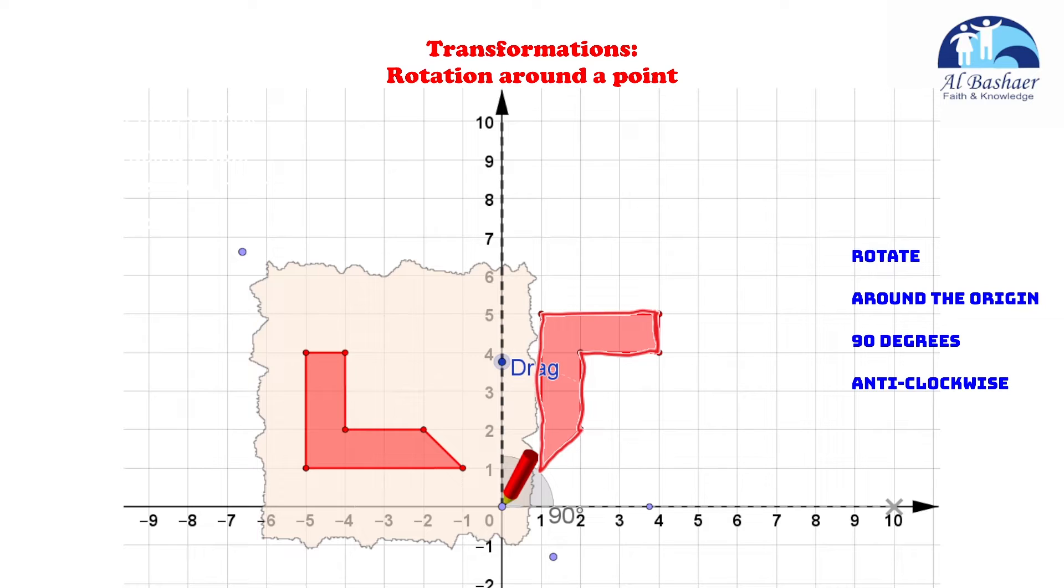The next step is to write down the vertices of the object of the image. So I'm going to start with the point negative one and one. And then I'm going to move on to negative five and one. Then negative five and four for this point. And then for this point, I'm going negative four and four. For this point, I'm going negative two and two.